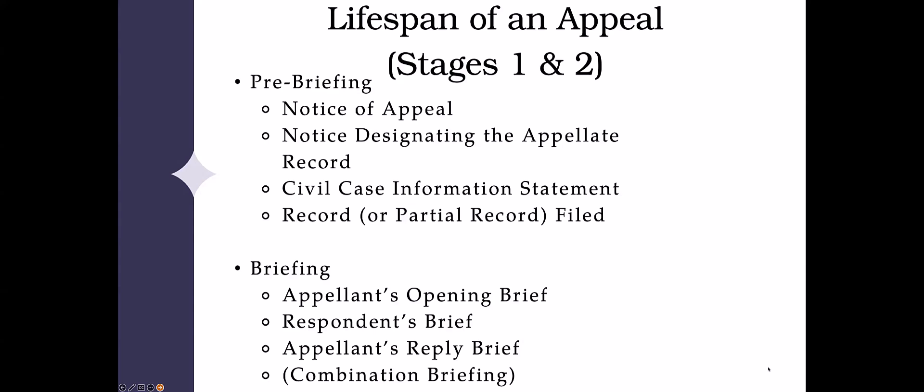There's a question in the chat: which of these pre-briefing requirements are curable if you mess up? The answer is everything but the notice of appeal. The notice of appeal is the one document in the appellate world that is unforgiving in state court. If you are early on your notice of appeal, that might be correctable, but if you are late, you're out of luck — there's really nothing you can do to cure it. There are varying deadlines, so it's crucial to read and reread the court rules. A common mistake is thinking a motion to reconsider resurrects an expired appeal deadline — it does not.